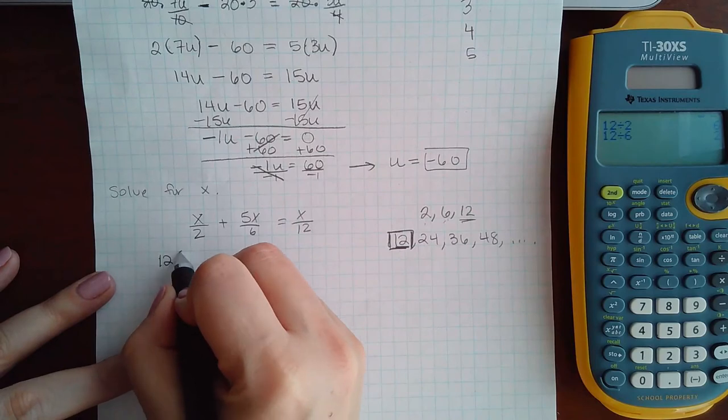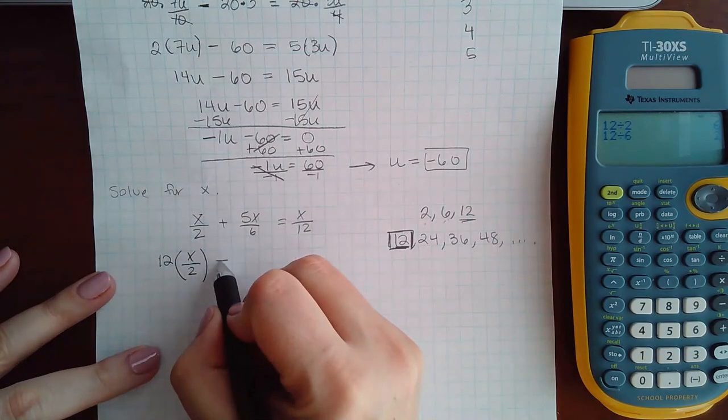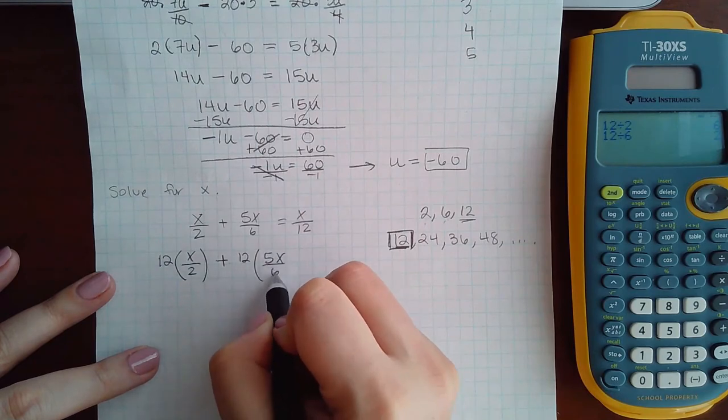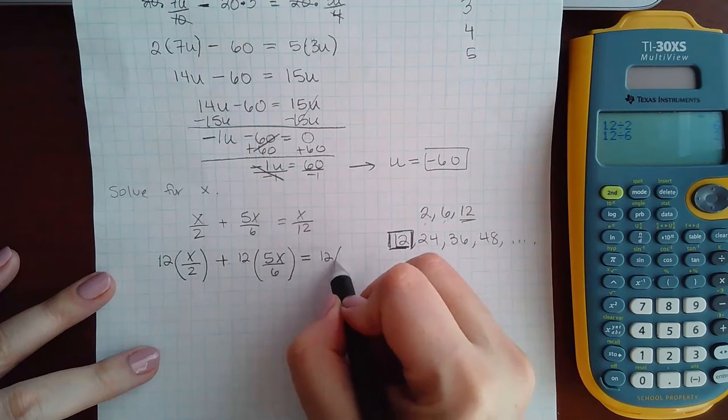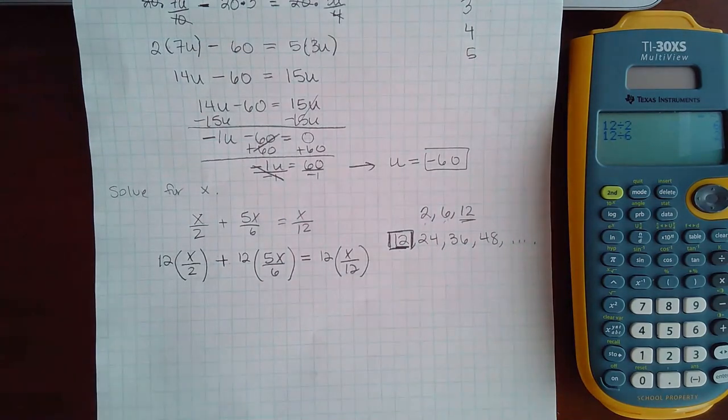So what I'm going to do is I'm going to do 12 times x over 2 in parentheses, put my plus, then 12 times 5x over 6 in parentheses, equal to 12 times x over 12. Now remember, the purpose of multiplying by the LCD is to eliminate the fractions. So please do, in fact, eliminate those fractions.